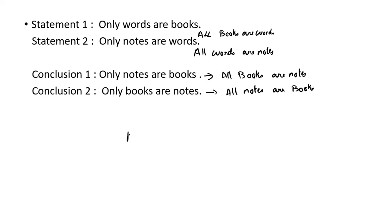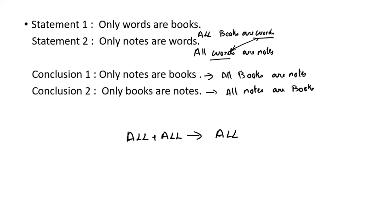The first question uses only words — all plus all. The combination rule: all plus all gives all. All is reversible, so the first all and the second all are the same. Therefore the conclusion is: only books are notes — conclusion is correct.